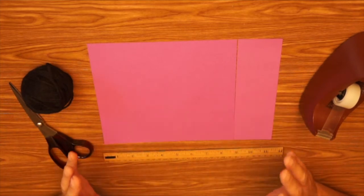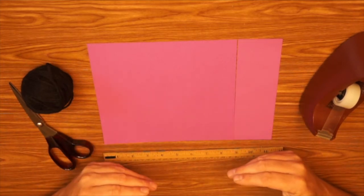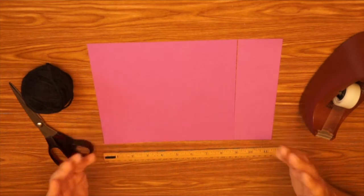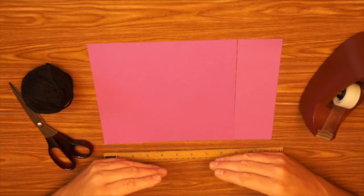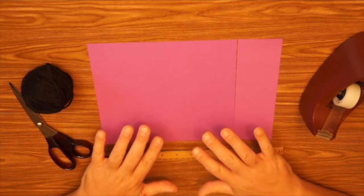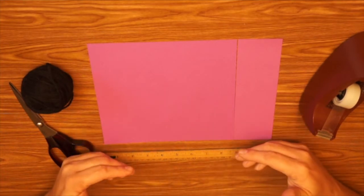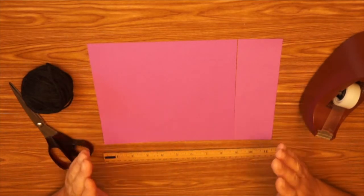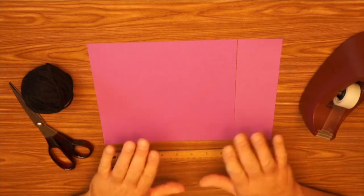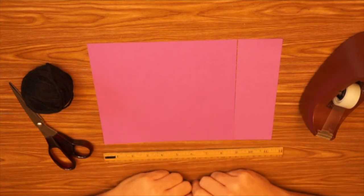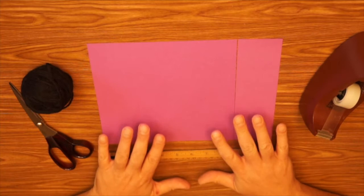rather than construction paper because when we get ready to decorate the kite, if you choose to do so, it's easier to color on copy paper. Also, copy paper folds a lot easier than construction paper. Sometimes when you fold construction paper, it tends to tear a bit. And so that's why I'm choosing to use copy paper today.